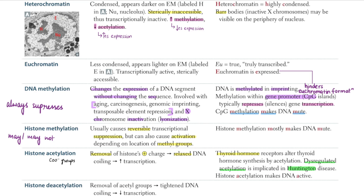There is no change in DNA sequence with methylation, although there is a change in expression — because this is an epigenetic change. It does not tamper with the sequence; it just lets some parts express and others not. For gene promoters, methylation works by methylating CpG islands present on the promoter, which controls whether transcription happens or not — similar to the lac operon. DNA methylation always suppresses transcription.